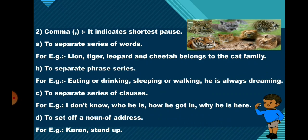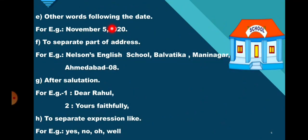The comma is used to set off a noun of address. For example: 'Ramu, stand up.' So in order to set off a noun of address, we put a comma in between. It is also used after words following the date. For example: November 5, 2020. It is also used to separate parts of an address. For example: Nelson's English School, Balvatika, Maninagar, Ahmedabad. So in order to separate parts of an address, we use a comma.